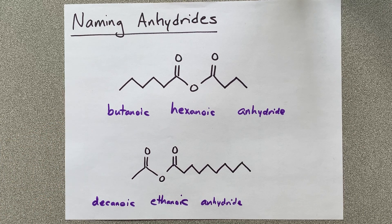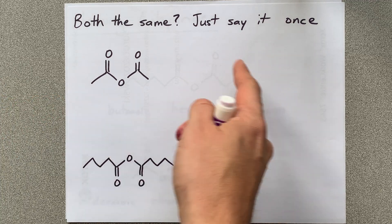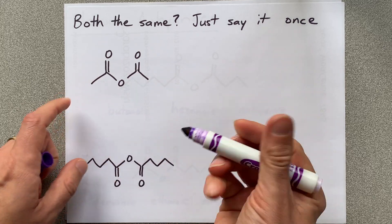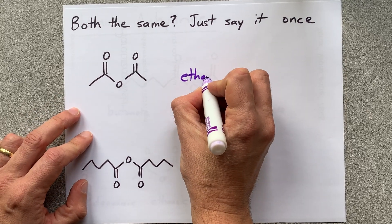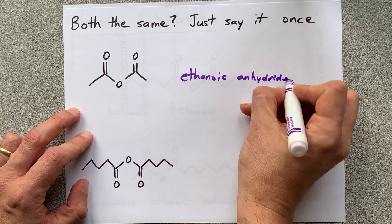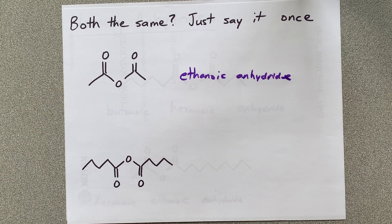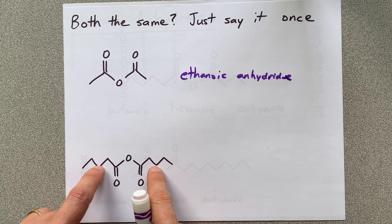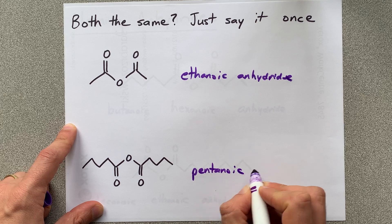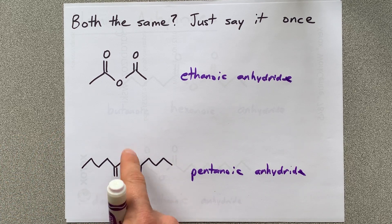We've already named two of these. Now, what happens if both of those carbon chains are the same length? You only have to say that word once. Rather than calling this ethanoic ethanoic anhydride, you just shorten it to a single ethanoic anhydride. When people see there's only a single OIC in front of anhydride, they know it's on both sides of the chain. Five carbons is pentanoic, and if you say pentanoic anhydride, we know it's a pentanoic chain on both sides of the OOO.